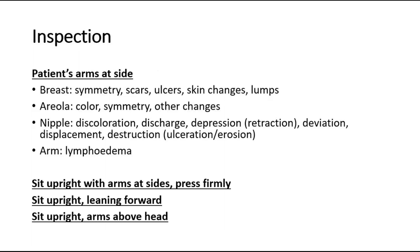On inspection, with the patient's arms at their side, we inspect the breasts and compare both breasts — look at their symmetry, whether both breasts are symmetrical or not, any presence of scars that suggest a previous breast surgery, ulcers, skin changes, or breast lump noted. After that we look at the areola to assess the colour, symmetry on both breasts, and any other changes.